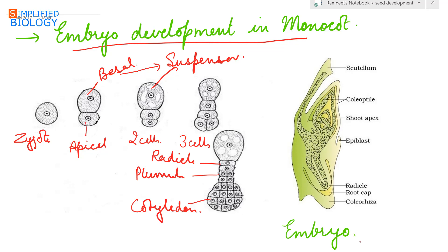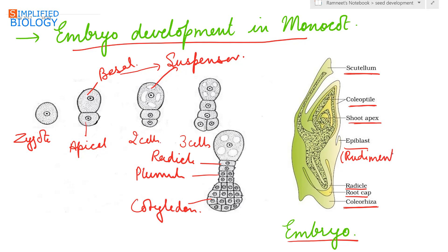A fully matured monocot embryo has a single cotyledon referred to as the scutellum. The embryonal axis has the shoot apex, that is the plumule, which has a protective covering called the coleoptile. The radicle lies towards the lower side, surrounded by root cap, and also has a protective covering called the coleorhiza. A rudimentary cotyledon can be seen, which is referred to as the epiblast.